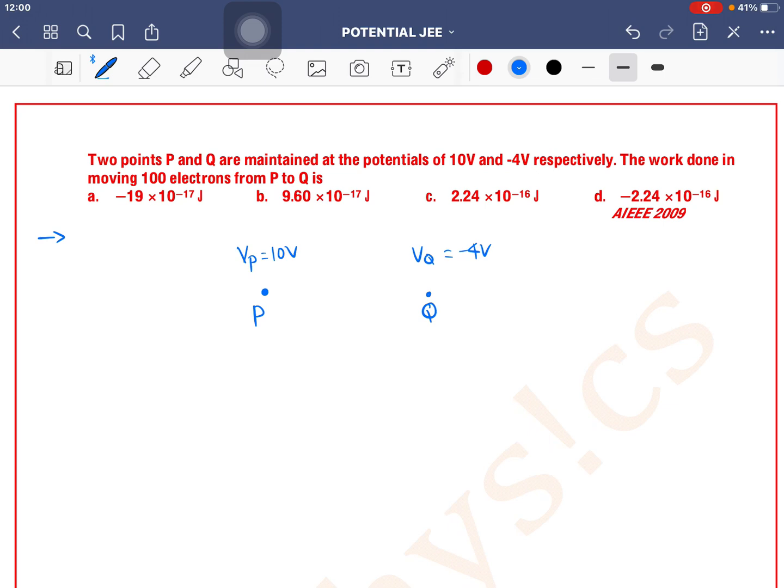And the work done in moving 100 electrons from P to Q, so how much charge are we moving? Q, this small q, the value is n into e. So n is 100 and e ka value is 1.6 into 10 to the power minus 19. So here 1.6 into 10 to the power minus 17 coulomb, right?